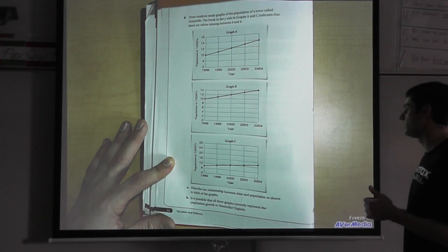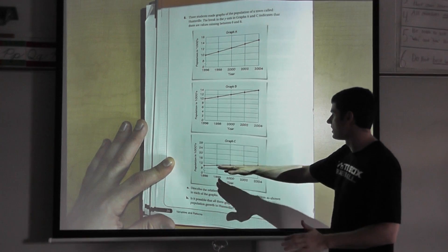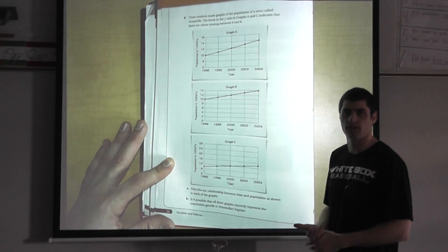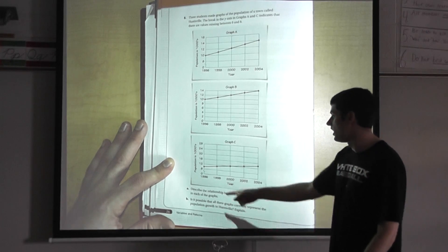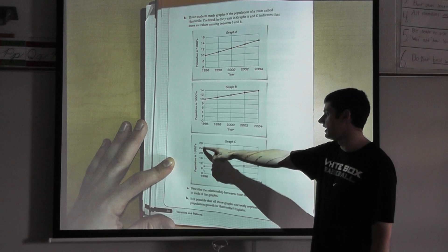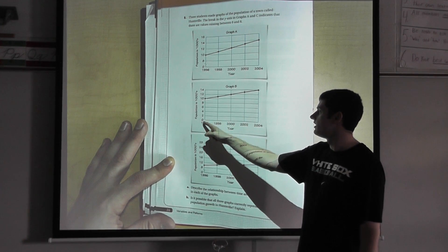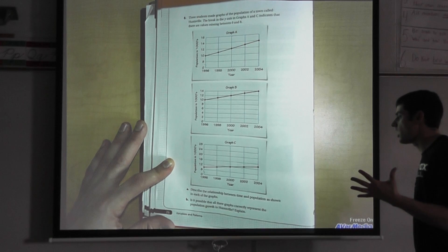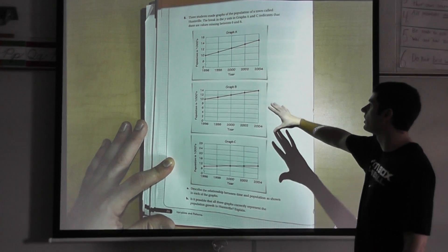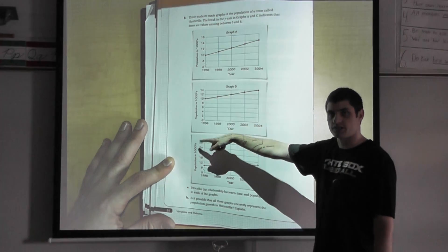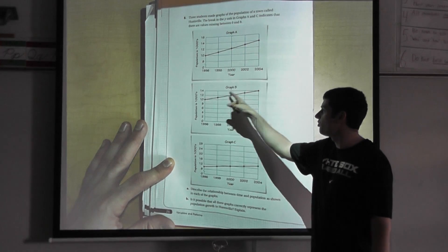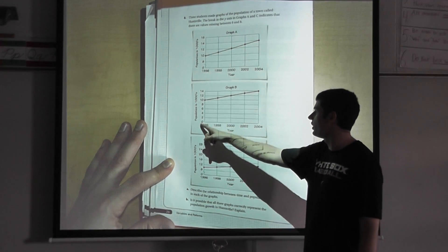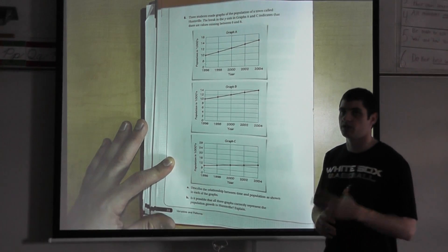Describe the relationship between time and population as shown in each of the graphs. Well, if I look at each of the graphs, I notice that the lines in the graphs are definitely different throughout. Well, why are these graphs different if they have the same information? This comes in with the interval. If I look at graph B, the intervals are consistent. This goes by two over here. This goes by two here. This plots out directly the population and how it grows. So if I look at graph B, I can tell that each year the population is steadily increasing based off that information.